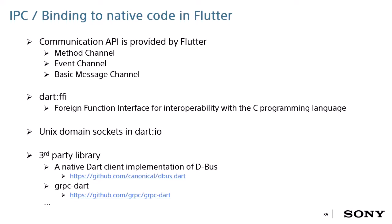I will explain about IPC and language binding in Flutter. You have some options. The first is using the Flutter API: APIs called Method Channel, Event Channel, and Basic Message Channel are provided. These are synchronized communication protocols between Dart and native programs like C++. The second is the Dart FFI — developers can use the Dart FFI library to call native C APIs. FFI stands for Foreign Function Interface. The third is the UNIX domain socket in Dart IO. UNIX sockets are lighter than TCP/IP sockets, and developers can use UNIX domain sockets in Dart.